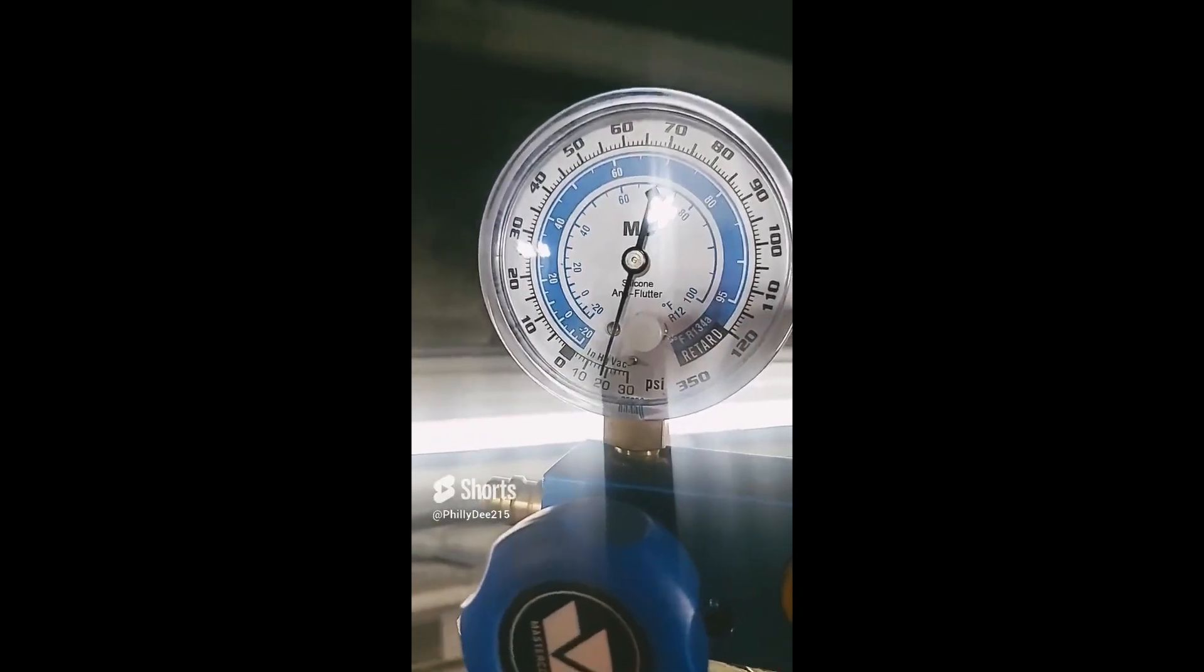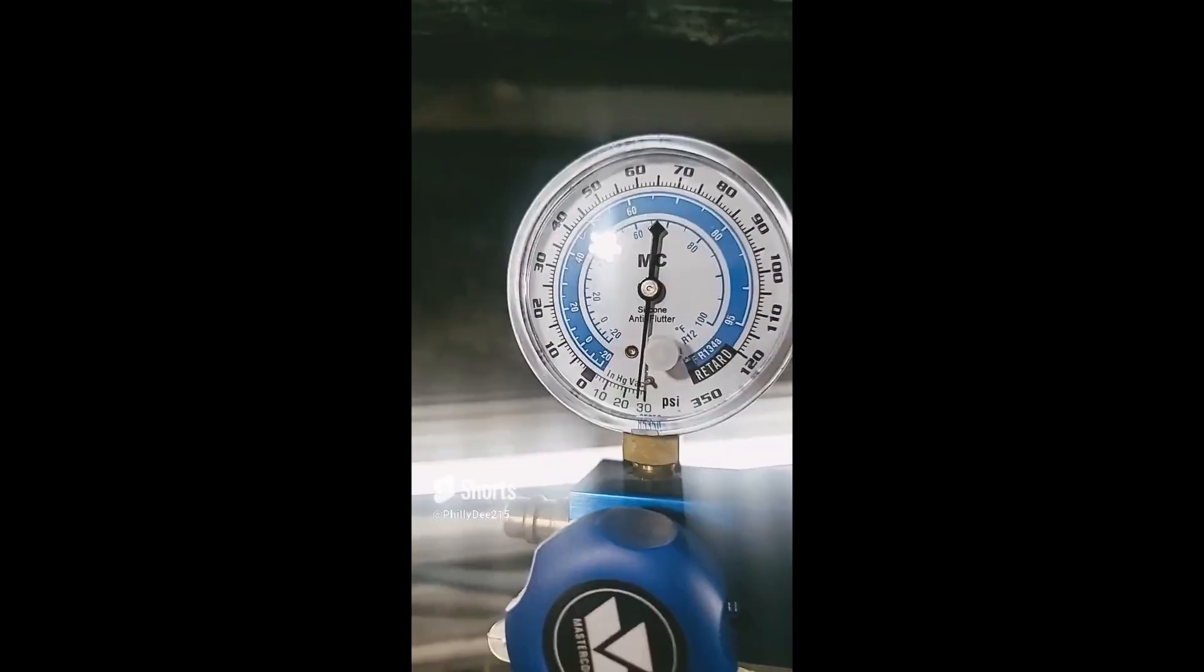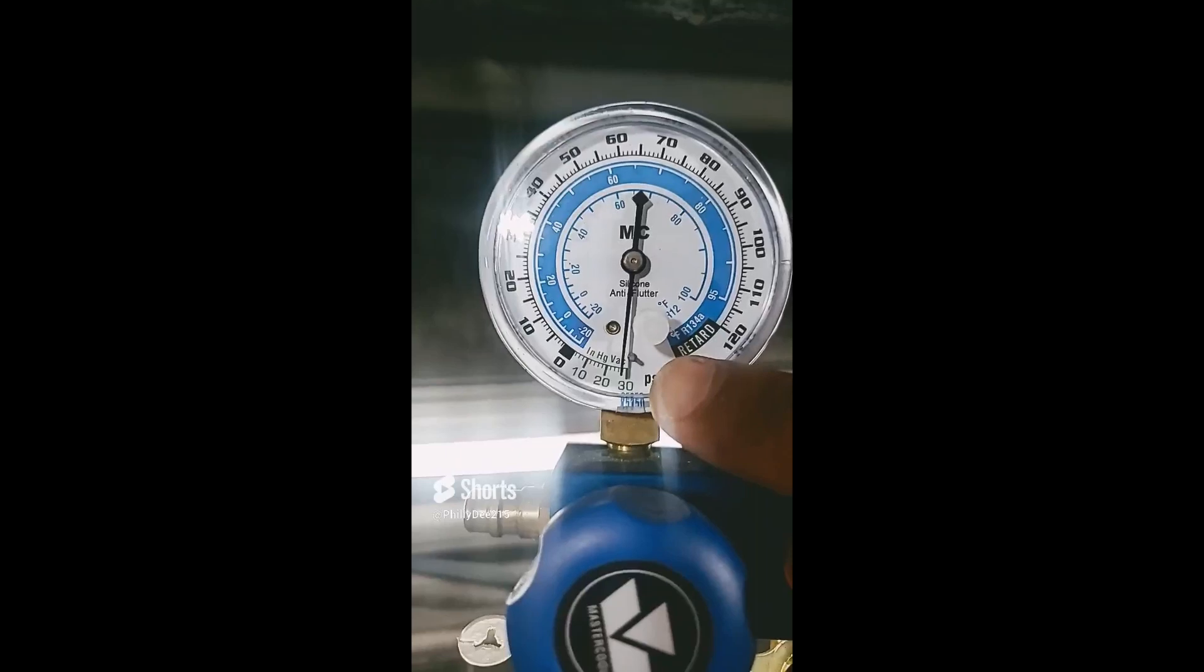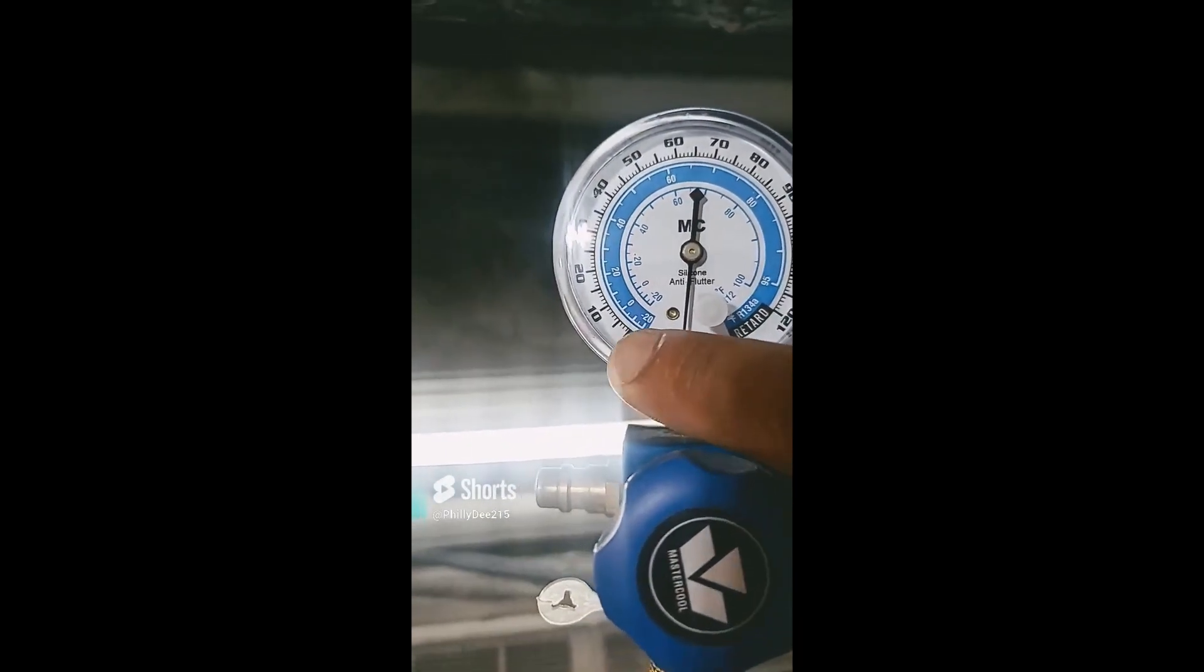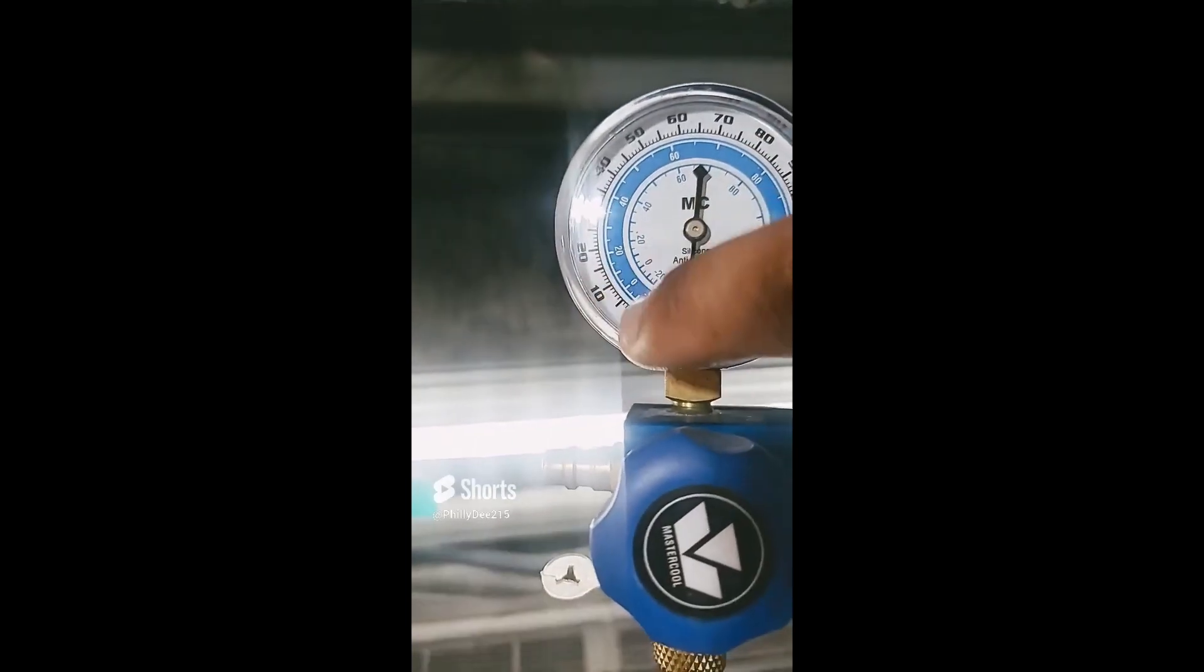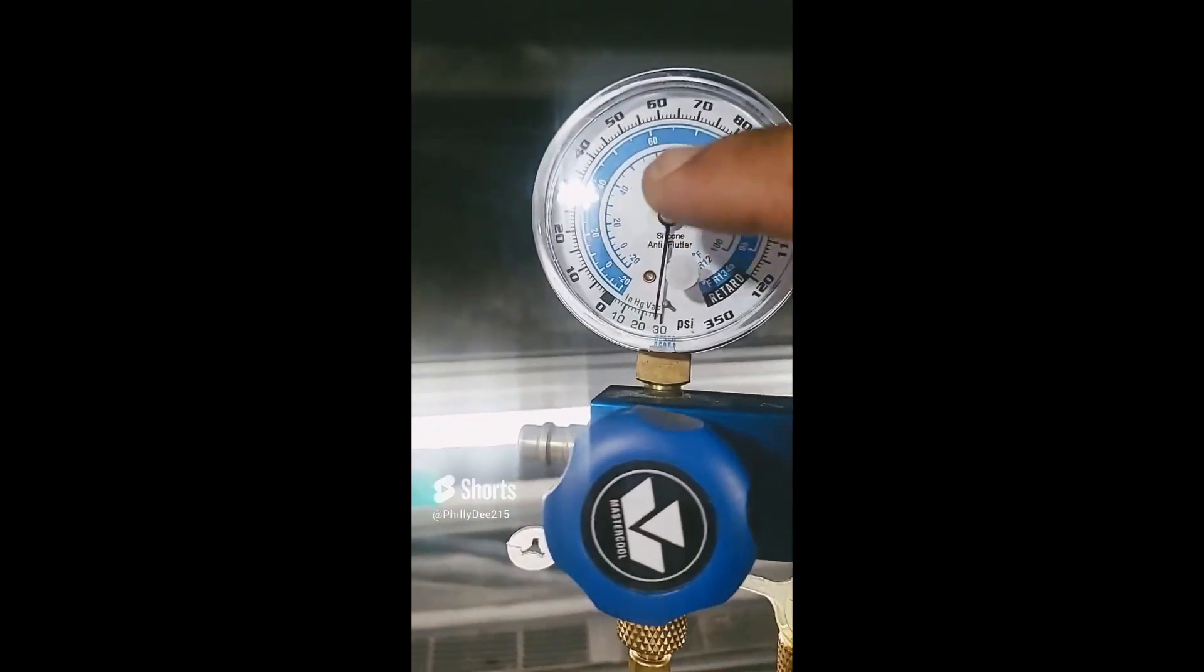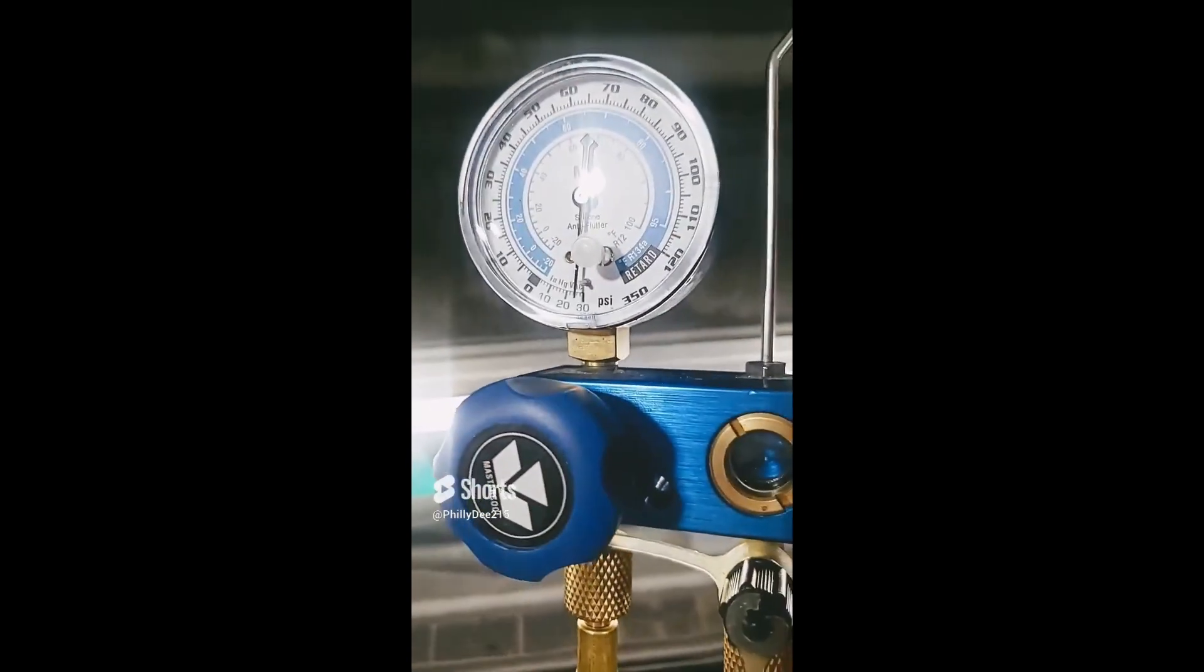Alright. So you want to be anywhere between 28 and 30 inches of mercury. Now, if you have a leak in your system, your gauge is not going to read 28 to 30 inches of mercury. Your gauge is going to stay up here. Okay? Around here. Because if you have a leak in your system, the pump can't pull a vacuum on the system. So don't get that confused.